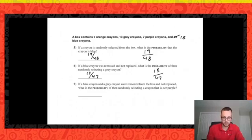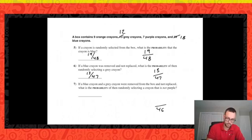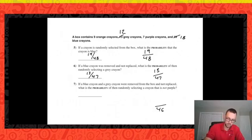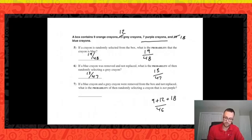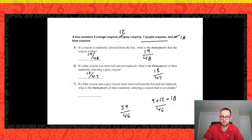Now I've taken out the blue crayon and the gray crayon, so I'm down to 46. What is the probability of selecting a crayon that is not purple? I still have 9 orange, 12 gray, and 18 blue crayons — giving me 39 out of my 46 crayons that are not purple.